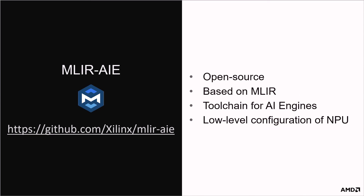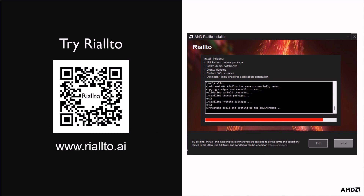MLIR AIE is an open source software toolchain by AMD research for AI engines. It is based on the hugely popular MLIR compiler framework. It generates the low-level configuration data needed for the components of the Ryzen AI NPU, including tiles and streaming interfaces. MLIR AIE is used in Rialto to build the tutorial examples. If you're a compiler researcher or developer, visit the MLIR AIE GitHub repository to find out more. Install Rialto now to get started exploring Ryzen AI. Download the installer from the Rialto web pages by following the link on screen or the QR code. If you don't have a Ryzen AI laptop yet, you can browse the Rialto material on the web pages.